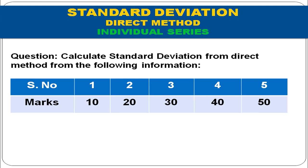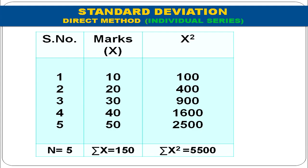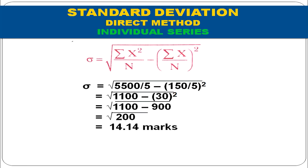Calculate standard deviation by the direct method. The serial numbers are 1 to 5 and the marks are 10, 20, 30, 40, and 50. ΣX² = 5500, Σx = 150, n = 5. Applying the formula: σ = √(5500/5 − (150/5)²) = √(1100 − 900) = √200 = 14.14 marks. We have learned how to calculate standard deviation by the direct method in individual series.